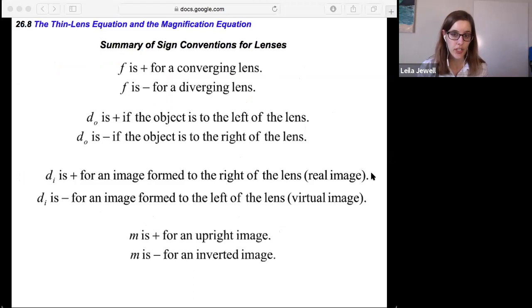Image distance is positive for an image formed to the right of the lens, which is a real image. And it's negative for one that's formed to the left of the lens, our virtual image. So our left and right have switched. And that's just because with mirrors, the light bounced off the mirror and went back the way it came. But with lenses, the light is passing through. And so the real is always where is the actual light ray. So if the light is passing through, real is going to be on the right side.